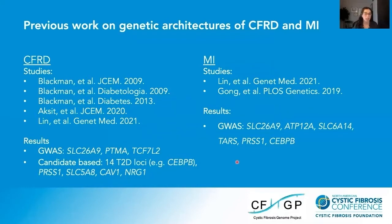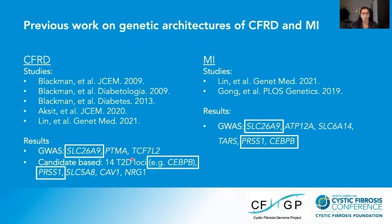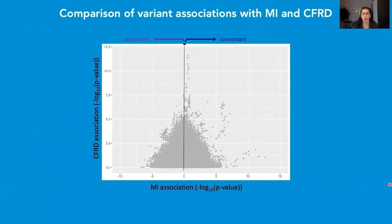The International CF Modifier Consortium has identified a number of loci that associate with CFRD and MI through genome-wide association studies and candidate-based approaches. Of the CFRD-associated loci, some were related to type 2 diabetes, whereas others were not. Interestingly, variants at three loci have been associated with both traits: SLC26A9, CEBPB, and PRSS1. To evaluate the overlap in genetic architecture between these two traits, we conducted genome-wide association studies for both traits, checking for association between all common genetic variants genome-wide with each trait.